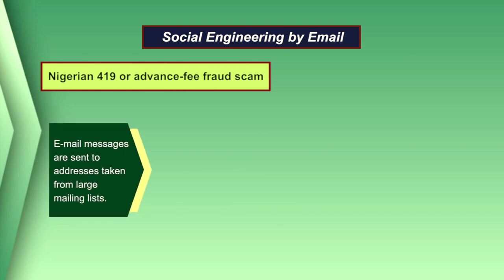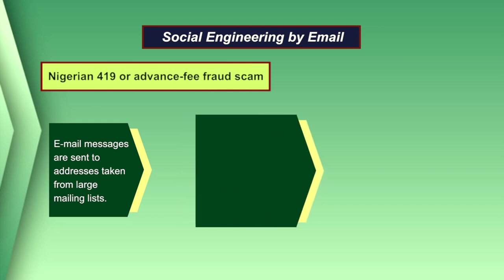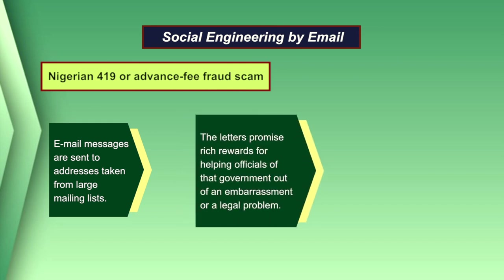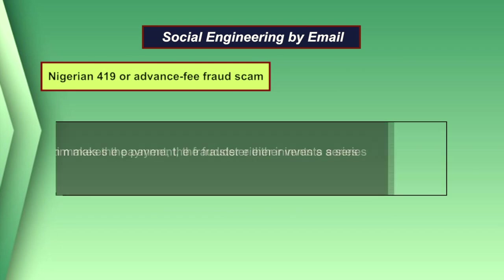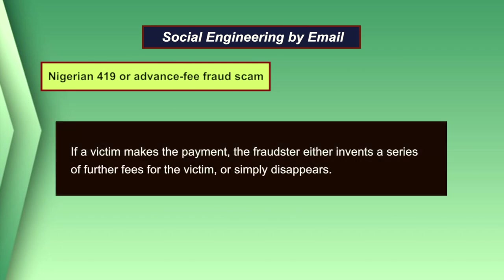Email messages are sent to addresses taken from a large mailing list. The letters promise rich rewards for helping officials of a government, bank, or quasi-government agency out of an embarrassment or legal problem. Typically, the pitch includes mention of multi-million dollar sums, with the promise that you will be permitted to keep a percentage of the funds. If a victim makes the payment, the fraudster either invents a series of further fees or simply disappears. It is named after the article of the Nigerian Penal Code under which the criminal can be prosecuted.